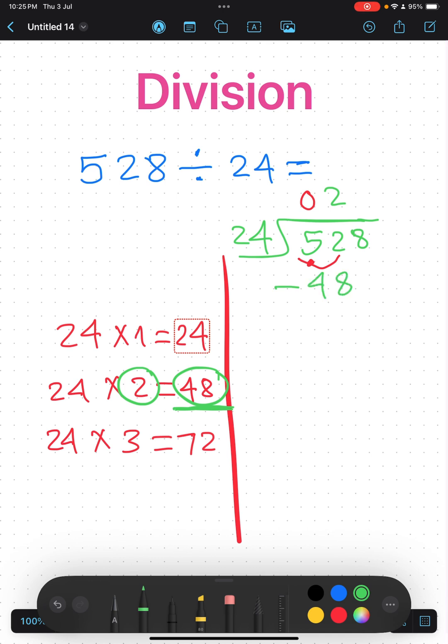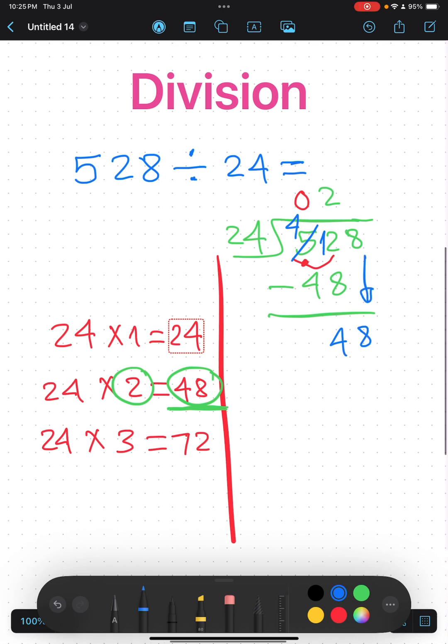2 minus 8 can't be done, so we borrow. 5 becomes 4 and 2 becomes 12. Now 12 minus 8 is 4. Drop down the 8.